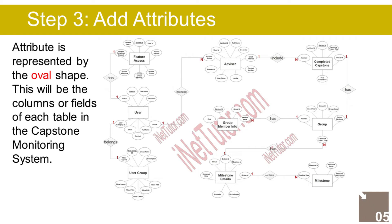The last part of the ERD process is to add attributes to our entities. The User entity has the following attributes: User ID (primary key, represented with underline), Username, Password, Avatar, Full Name, Contact, Email, User Category ID (foreign key), and Status. The User Group entity has the following attributes: User Group ID (primary key, represented with underline).